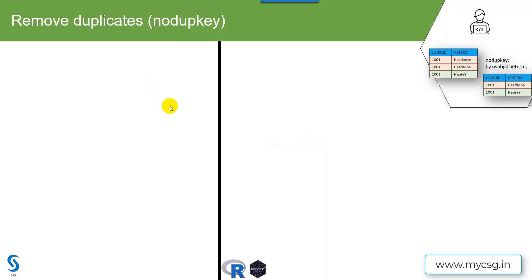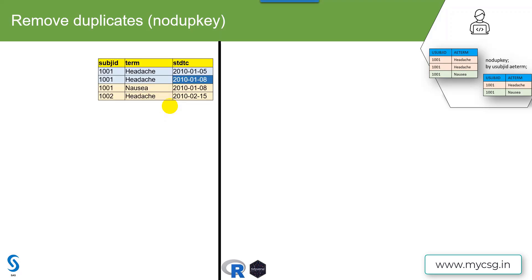There will be cases where we may have to remove duplicates based on certain key variables, or sometimes we may have to remove a record if it's an entire duplicate — meaning if all the variables have the same values on two or more records. Let's first see the case of removing duplicates based on key variables.